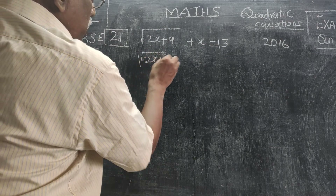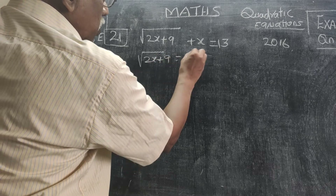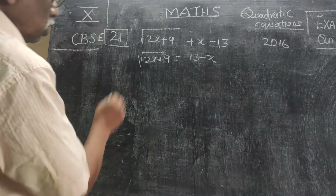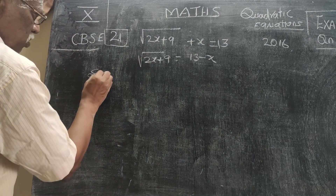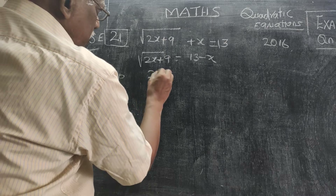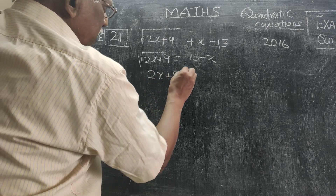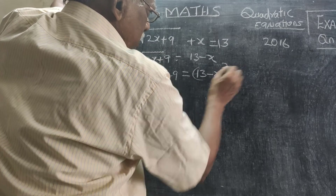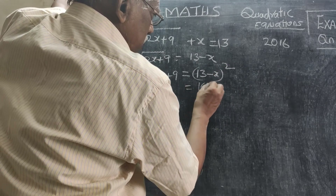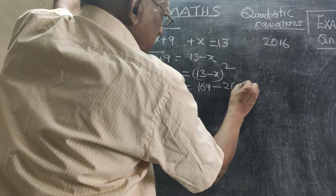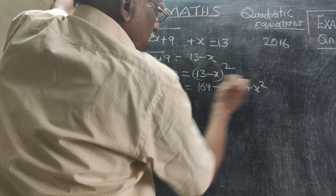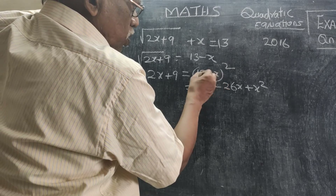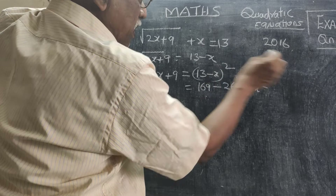For problem 21, I am writing √(2x+9) equal to 13 minus x — taking x to the other side. To remove the square root I am squaring both sides. So this becomes 2x+9 on the left, and on the right (13−x)² which expands to 169 minus 2 into 13 into x, plus x squared.